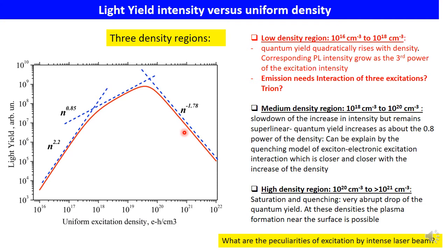The high density region from 10^20 to higher than 10^21 per cm³ shows a saturation and quenching with a very abrupt drop of the quantum yield. At these densities, plasma formation near the surface is possible. We can now examine the peculiarities of the excitation by an intense laser beam.